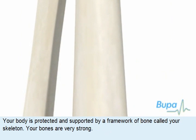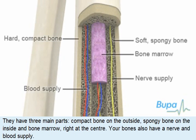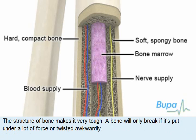Your body is protected and supported by a framework of bone called your skeleton. Your bones are very strong. They have three main parts: compact bone on the outside, spongy bone on the inside, and bone marrow right at the centre. Your bones also have a nerve and blood supply.